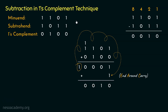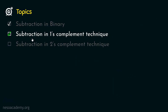When we get the carry, we end-around it, place it at the least significant bit position, and add it with the rest of the bits to finally get the result. Now let's focus on subtraction in two's complement technique. We take the same minuend 1101 and subtrahend 1011, and find the negative inverse using two's complement method.